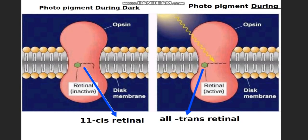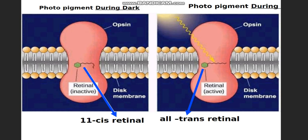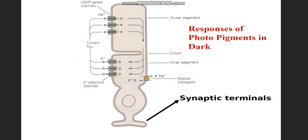In the dark, the pigment exists in the 11-cis retinal configuration — the inactive form. When light strikes, a conformational change occurs and the pigment converts to all-trans retinal. This change triggers a cascade of further changes. The photoreceptor has an outer segment with cyclic GMP-gated sodium channels, an inner segment with sodium-potassium ATPase pumps, and a synaptic terminal with calcium channels.